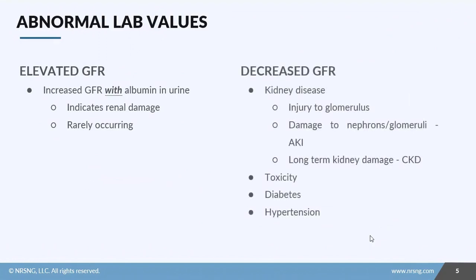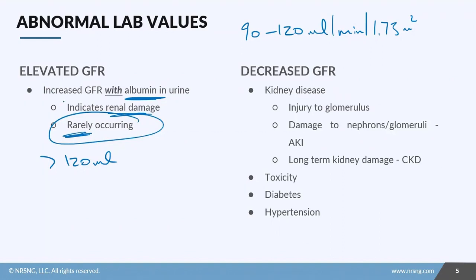So what does an abnormal GFR mean? Well you've got your normal GFR which is 90 to 120 mils per minute times 1.73 meters squared body mass. Well if you have an increased GFR, meaning that's greater than 120 mils, it's normally okay. However, you want to pay attention to this albumin. If you have an increased GFR and you have some albumin loss, that's going to indicate some sort of renal damage. This is a rare occurrence, but it can happen.